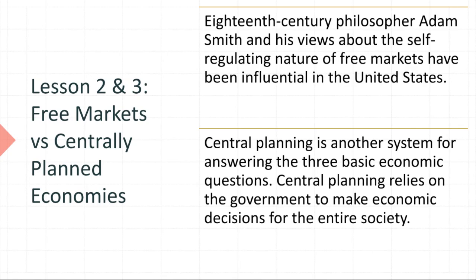Central planning is another system — the opposite, if you will, of what Adam Smith believed in. It is a system where the government is the decision maker, the shot caller on decisions for the entire society. A government comes into place and decides: for this year, we want more labor in this segment of the economy, we want to manufacture this product, we want to focus on particular areas. In a way, it is an oligarchy type of rule, similar to an oligopoly, where a few players run an entire system.